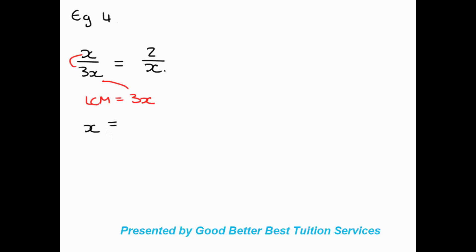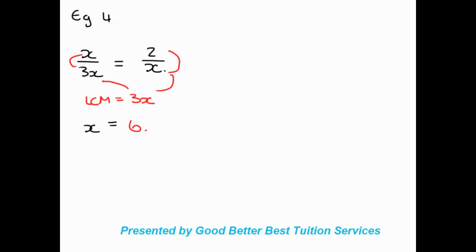On the right side, 3x divided by x is 3, because the x's cancel, and then 3 times 2 gives 6. So x equals 6. To recap: we identified variable denominators, found the LCM as the highest variable, divided the LCM by each denominator, multiplied by each numerator, and solved to get x equals 6. Thank you for joining — that's the end of today's recording.